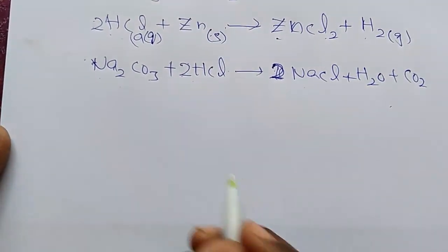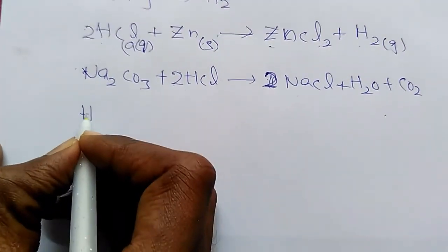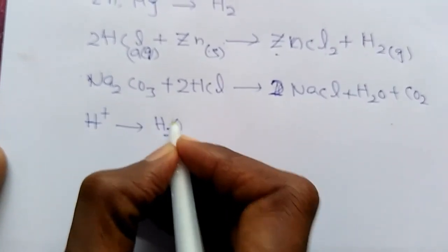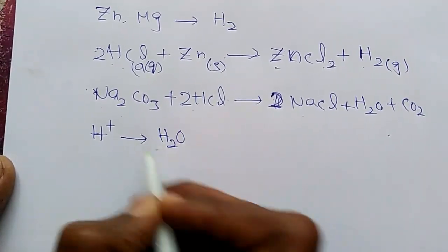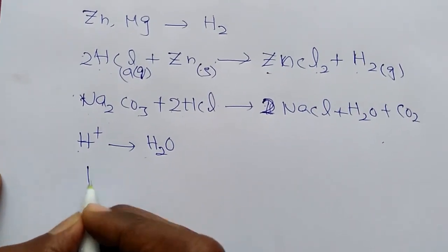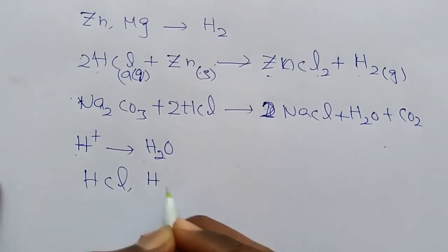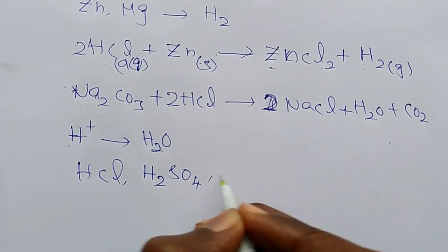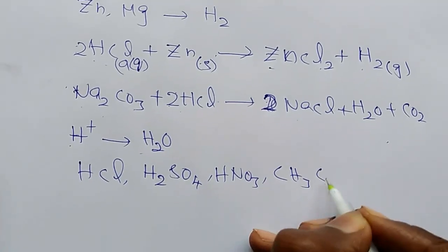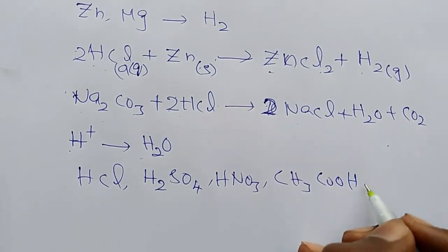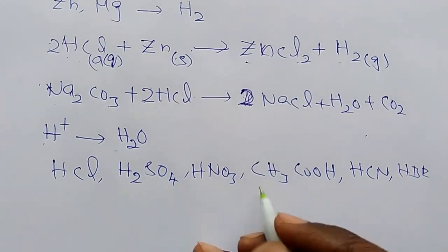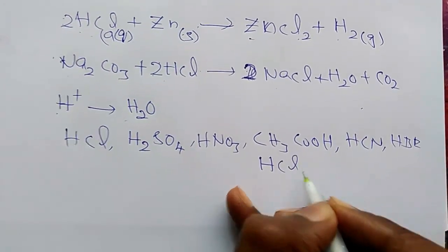The definition of acid: the substance which produces H+ ions in aqueous solution. In aqueous solution, H+ ions are produced. Examples: HCl, H2SO4, HNO3, CH3COOH, HBr — these all liberate H+ ions in aqueous solution.